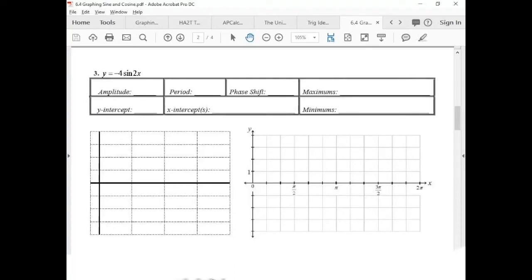Alright, so for our first period change, let's get with it. This cheat graph is really starting to help us here. Our amplitude is 4 because I see a negative 4 right here.